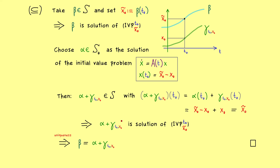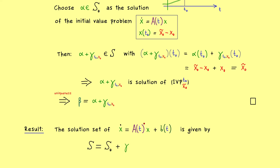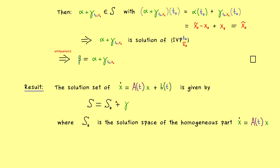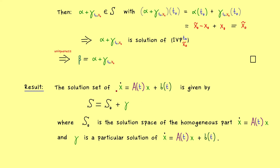Let's formulate the result again. The solution set of the system of linear differential equations is given as the set S₀ + γ, where S₀ is the solution space of the homogeneous part, and γ is one chosen — particular — solution of the whole system. It does not matter which one we choose, but it is fixed for the whole description. The solution set of the system of linear ODEs is an affine subspace of dimension n, where n gives the size of the system. For example, with a 2×2 matrix we get an affine subspace of dimension 2.